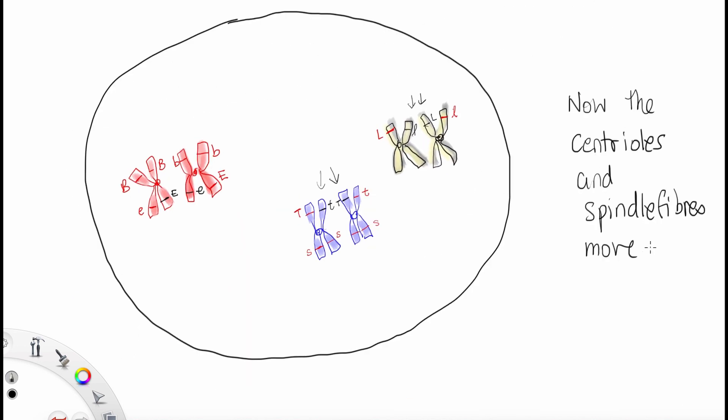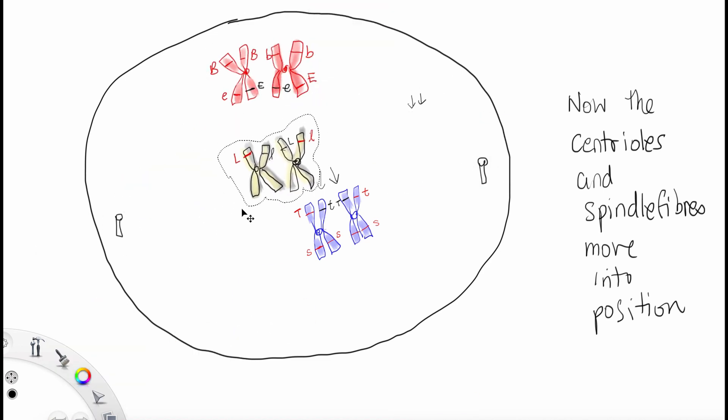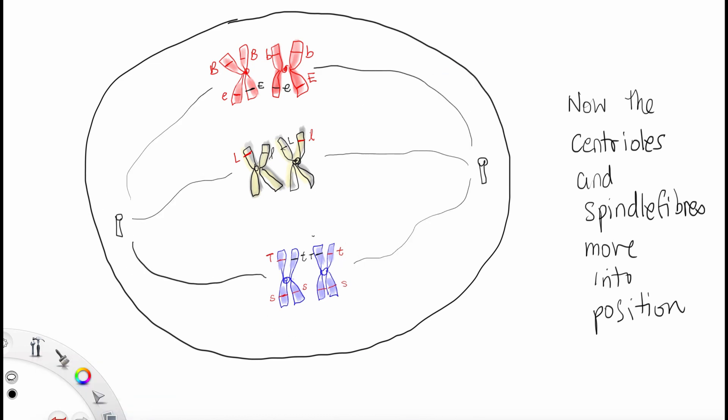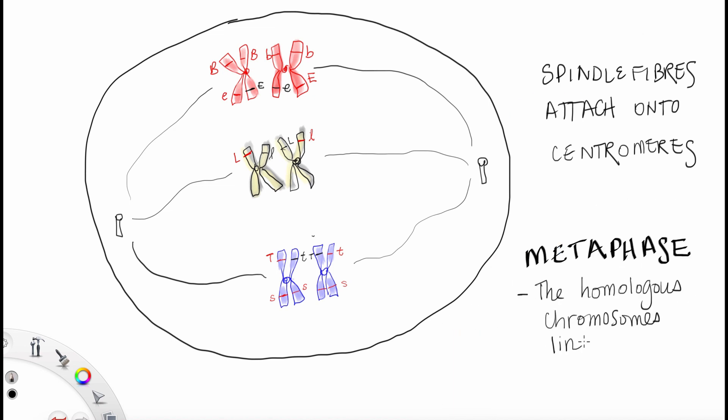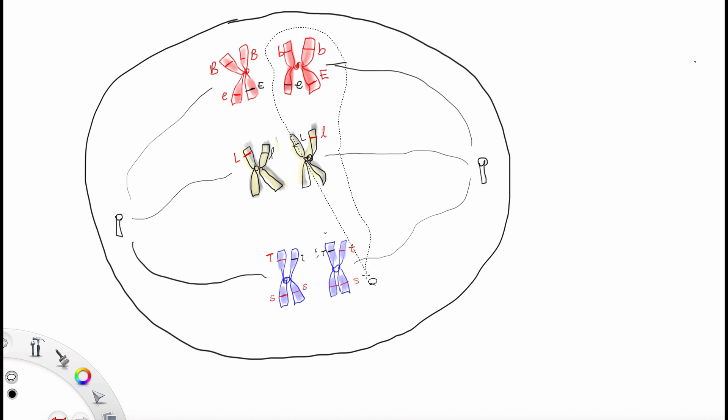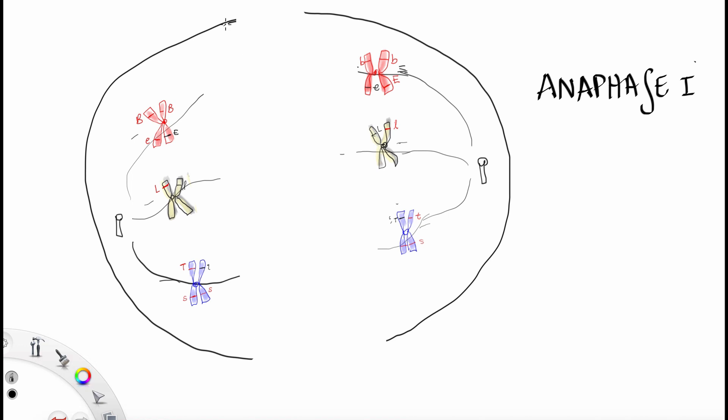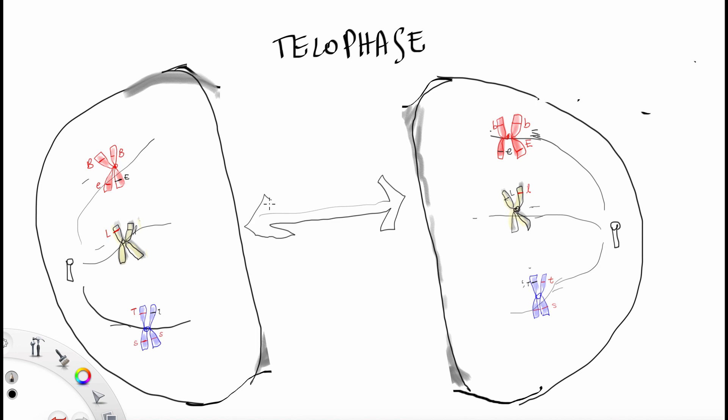Now the centrioles and the spindle fibers move into position. Let's proceed with meiosis. It's IPMAT, PMAT. So our next stage is metaphase 1. So the spindle fibers attach onto the centromeres. And notice that the homologous chromosomes are lining up facing each other, getting ready to divide. And now this is anaphase 1. The chromosomes are still intact. After anaphase 1, we have telophase 1.